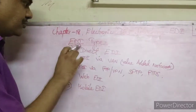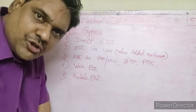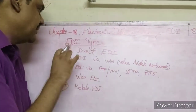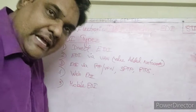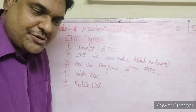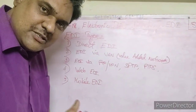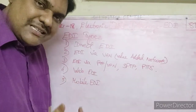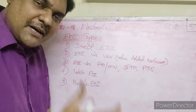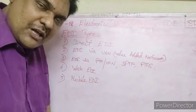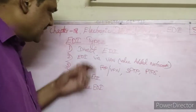Hello children, today we are going to see the next topic in Chapter 18: Electronic Data Interchange, in short we call it EDI. So what do you mean by EDI? Electronically, through computers and mobiles, business documents — vouchers, invoices, bills, agreements — are safely and securely transferred through electronic medium. That is Electronic Data Interchange.